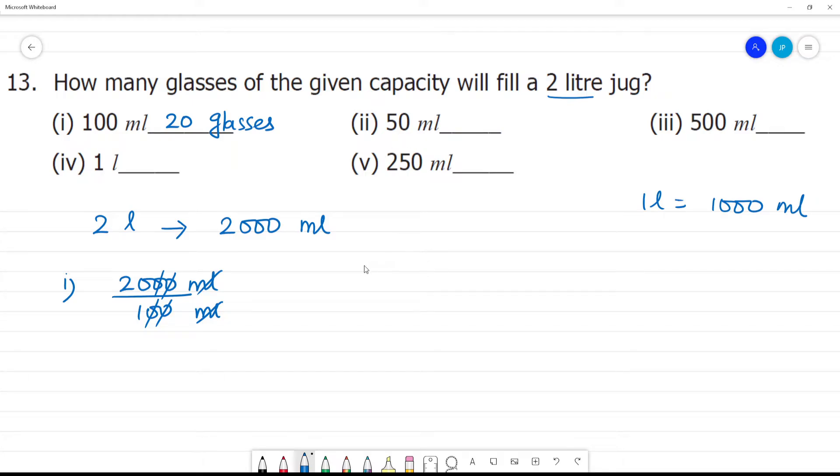Now we have 50 ml. We have 2,000 ml divided by 50. The ml units cancel. We have 2,000 divided by 50. 50 goes into 200 four times, giving us 40 glasses. 50 ml, 40 glasses fill the 2 liter jug.